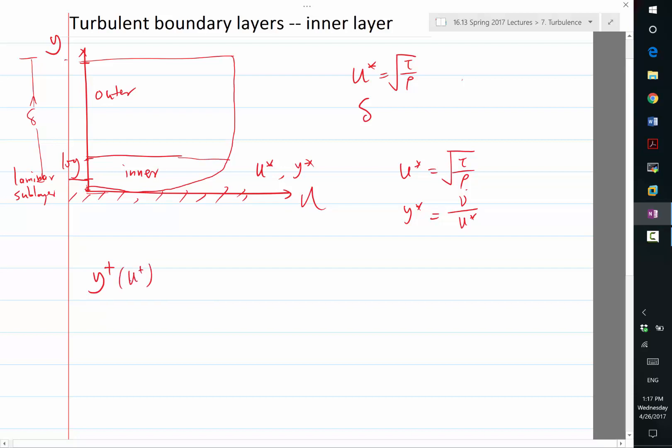That can be written as a universal function of u plus. Once you non-dimensionalize y and u with y star and u star, the relationship is universal. This is the linear portion that resides in the laminar sub-layer. Then there is an exponential portion that characterizes the log layer.